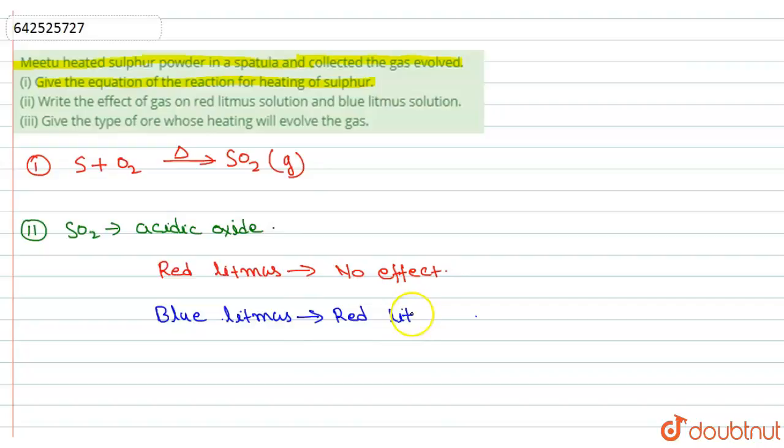So this is the answer for the second part of this question. Now coming to the third part of this question, give the type of ore whose heating will evolve the gas.